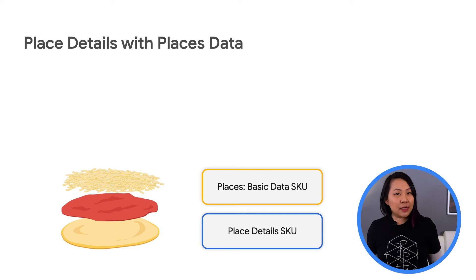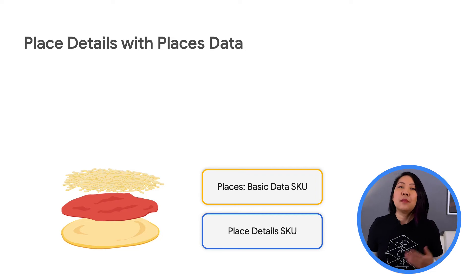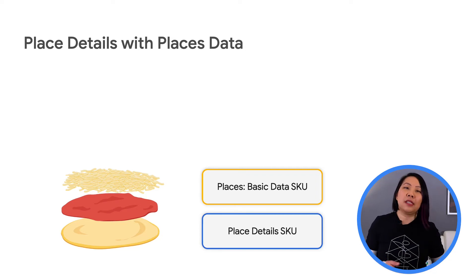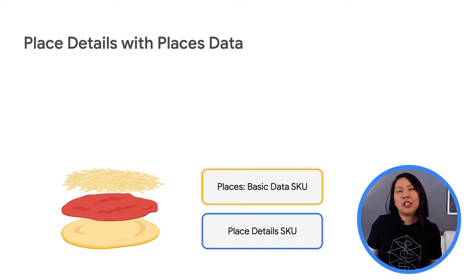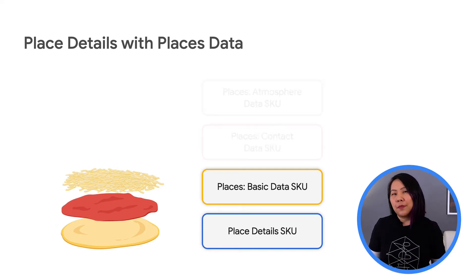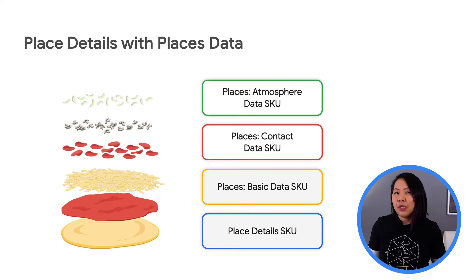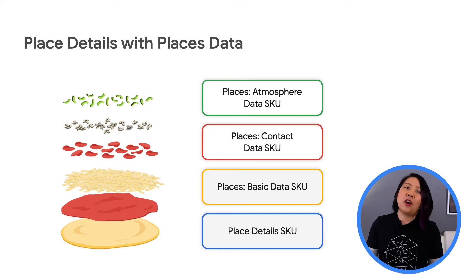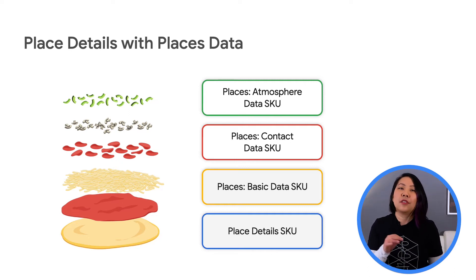It's like ordering a pizza with toppings. Fields in the Basic category are included in a Place Details request — those are like cheese and sauce and don't result in any additional charge. The Place Details request is the base, and the Contact and Atmosphere data are the toppings that cost extra.